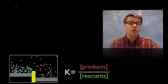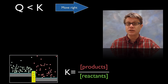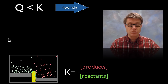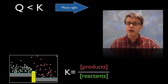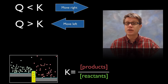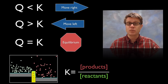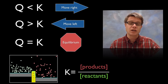To summarize: in a reversible reaction, if my Q value is less than my K value, the reaction has to move to the right — I have to convert more reactants into products. If my Q value is greater than my K value, I have to move to the left. And if my Q value equals my K value, I'm at equilibrium — they're at the same ratio.